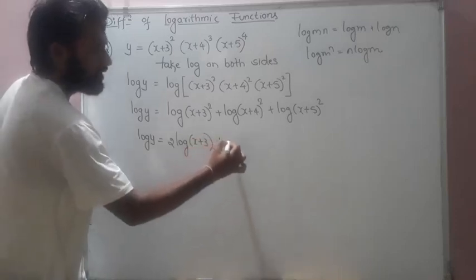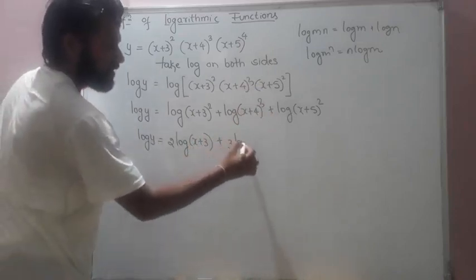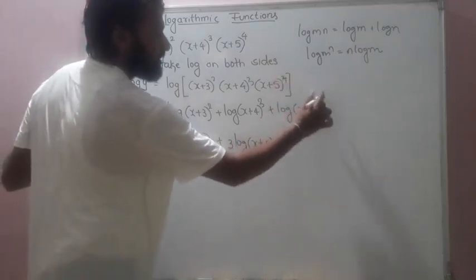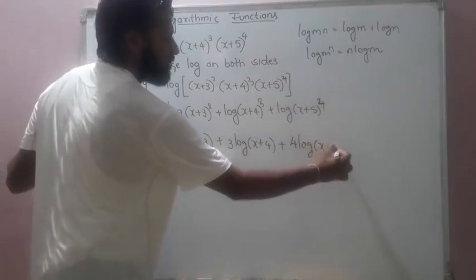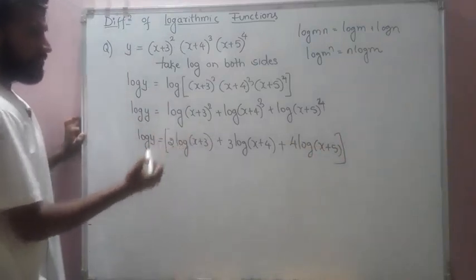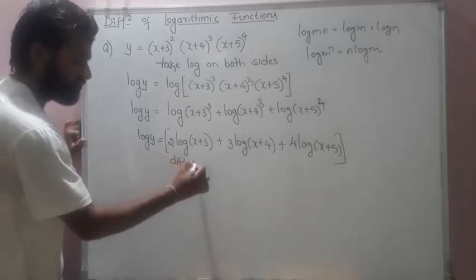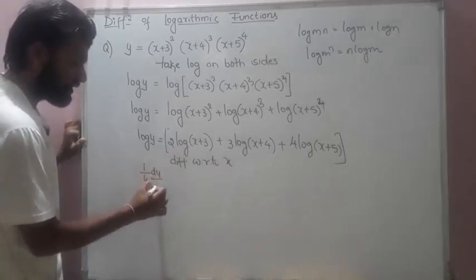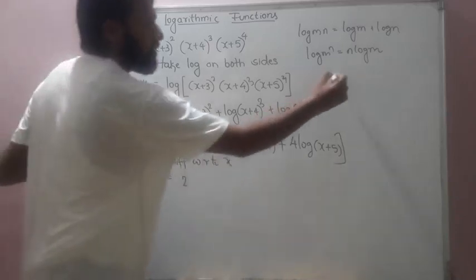So log y = 2·log(x+3) + 3·log(x+4) + 4·log(x+5). Now I'll go for differentiation with respect to x. On the left side this gives (1/y)·(dy/dx). The constant 2 stays, and the derivative of log(x+3) uses the basic rule d/dx[log x] = 1/x.